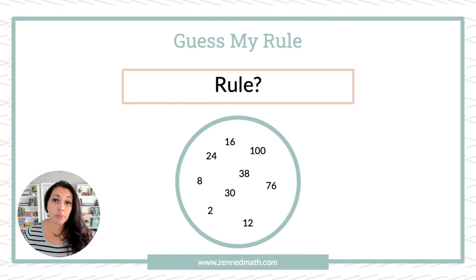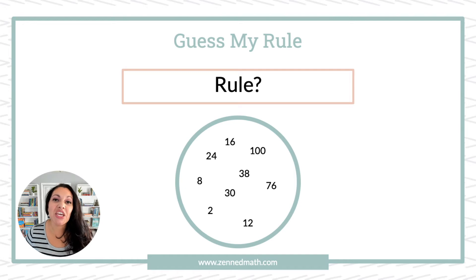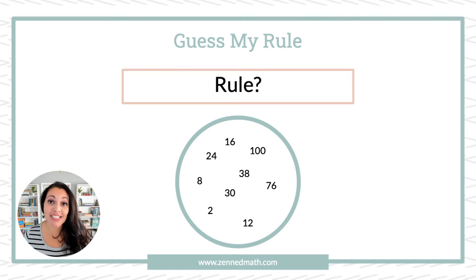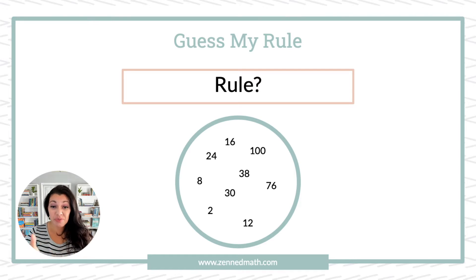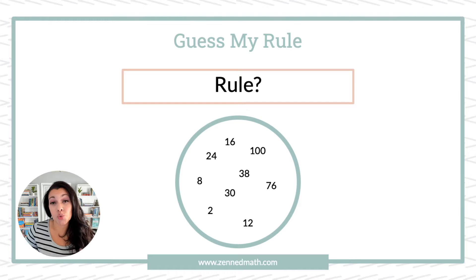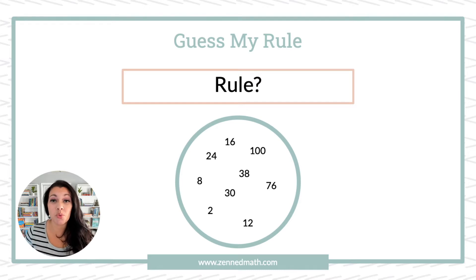For this activity, which could also be a numeracy routine, it is exactly what it sounds like — you're having students guess what the rule is. You provide students with a prompt, and here we're using a single loop Venn. Students have to analyze what they see, and then you ask them: what's the rule for these sets of numbers or what you see here?